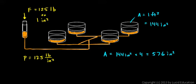So the area is multiplied by a factor of 576. That means the force generated upward is going to be 576 times as strong as the force that we put in. So the total force is going to be 576 times 125 pounds.